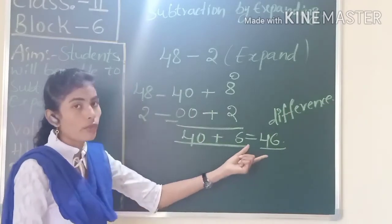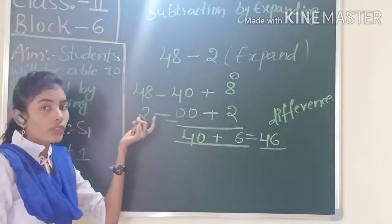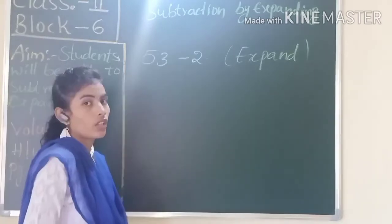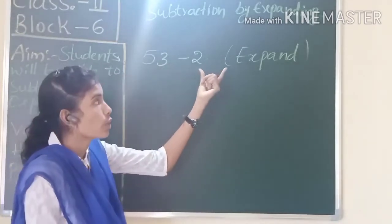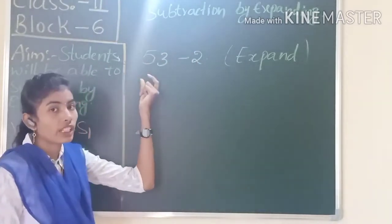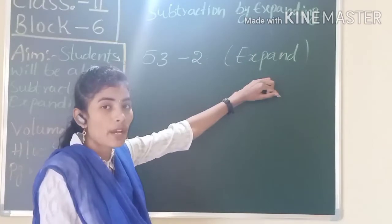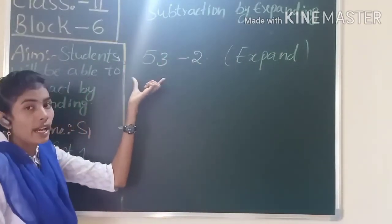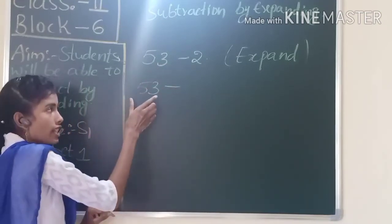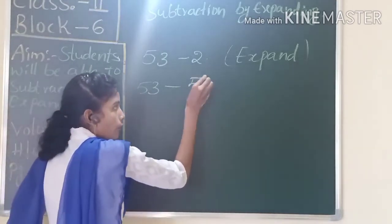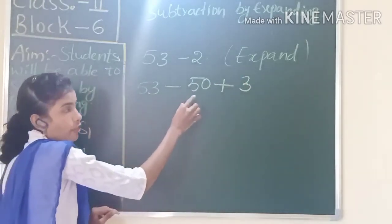Have you understood? 46 is our answer. How do we use the expansion method? First expand the number, then subtract. Let us take another example. So 53 minus 2 — we are subtracting 2 from 53. Which method are we using? We are using the expansion method. First expand the numbers. What is the expansion form for 53? 50 plus 3.